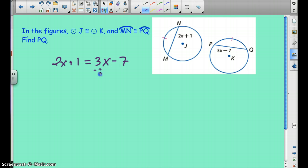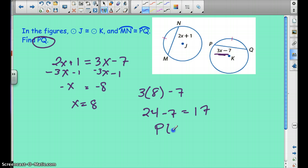And when we solve, we're going to subtract 3X from both sides, subtract 1, divide by negative 1, so we get X equals 8. But that's not what we're asking. We're trying to find what PQ is. So I'm going to go ahead and plug it in here for PQ. So 3 times 8 is 24, 24 minus 7 is going to be 17. So PQ then equals 17.